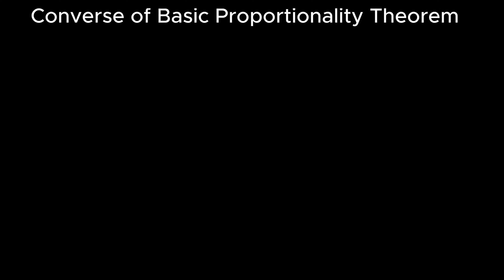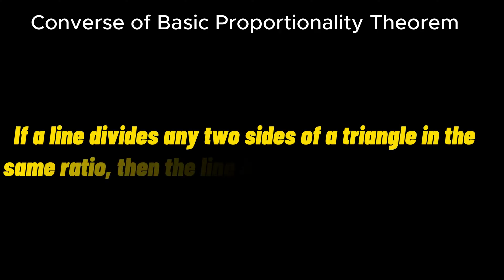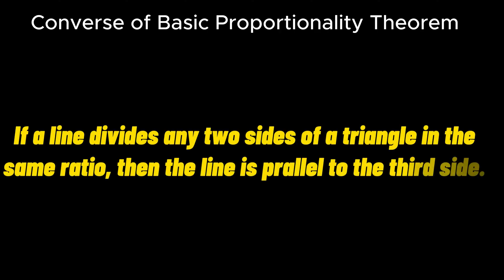In this video we will understand the Converse of Basic Proportionality Theorem. The theorem states that if a line divides any two sides of a triangle in the same ratio then the line is parallel to the third side.